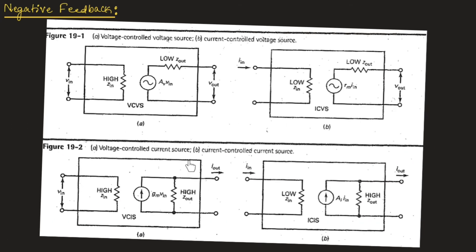Now let us understand the diagrams of the different negative feedback networks. The first diagram shows a voltage controlled voltage source, next is a current controlled voltage source, then a voltage controlled current source, and finally a current controlled current source. Figure 19.a shows the voltage controlled voltage source, which is a voltage amplifier. Since both input and output are voltage, we call this a voltage amplifier. Here, practically, input impedance is very high and output impedance is very low. The voltage gain is represented as AV.